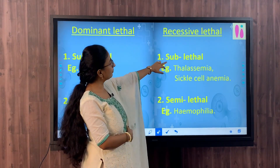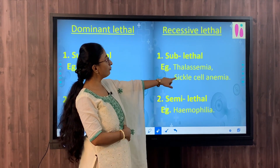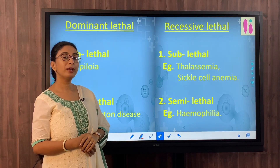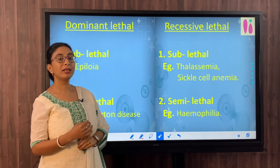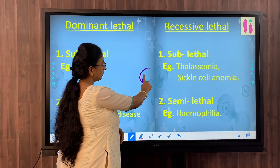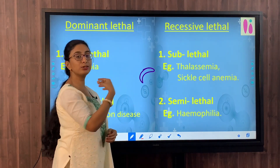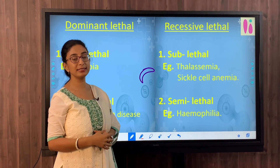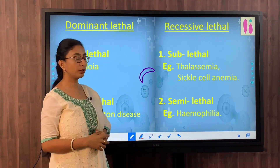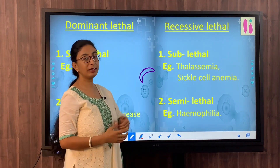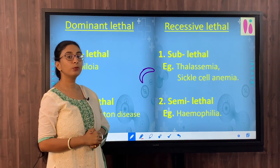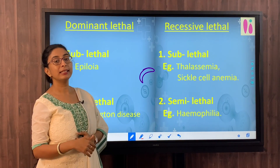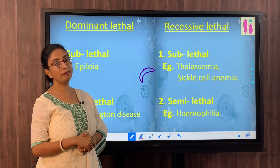Under recessive lethal, we have sublethal and semi-lethal examples. Sickle cell anemia is a recessive sublethal disorder where hemoglobin becomes sickle-shaped, reducing the oxygen-carrying capacity of the blood — a fatal disorder. Hemophilia is a recessive semi-lethal disease where there is reduced or no clotting of the blood, so in case of injuries there is no clotting, which can also be fatal.